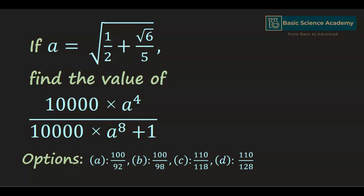In this video we are going to solve the problem: if a equals the square root of 1/2 plus root 6/5, then find the value of 10,000 multiplied by a to the power of 4, divided by 10,000 multiplied by a to the power of 8 plus 1.